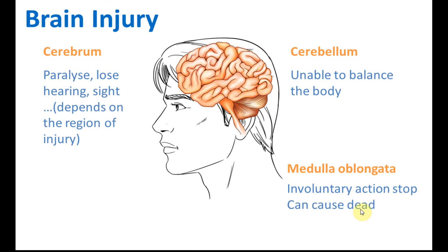Why? Because some involuntary actions are very, very important for life. For example, heartbeat is an involuntary action, but if this action stops then the person will die. So these are the effects of brain injury. Make sure that you remember all of this because these are famous questions in your test or exam.